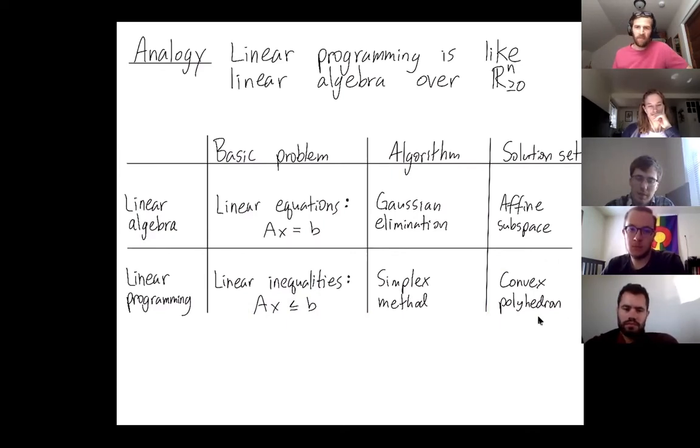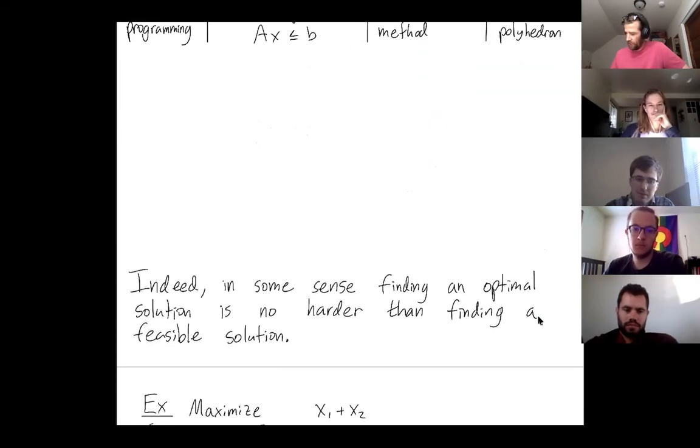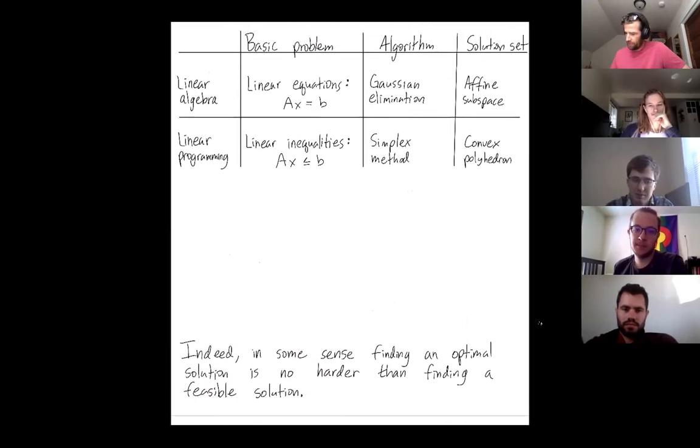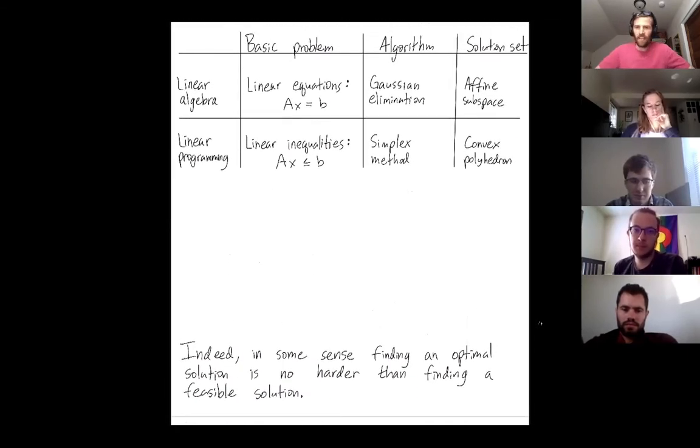So let me make this analogy more precise by a very cool discussion. I mean, a key difference is in linear programming, you're actually often trying to not just find a solution, but to optimize the solution, find the best solution. In linear algebra, you're just trying to characterize the set of all solutions. No solution is better than another, right?